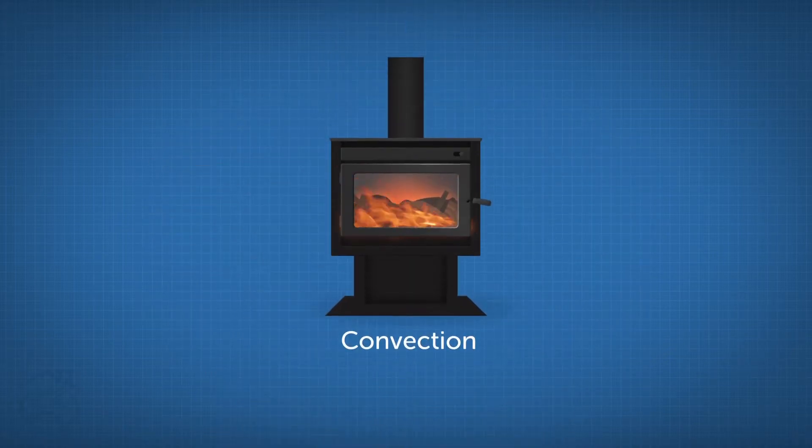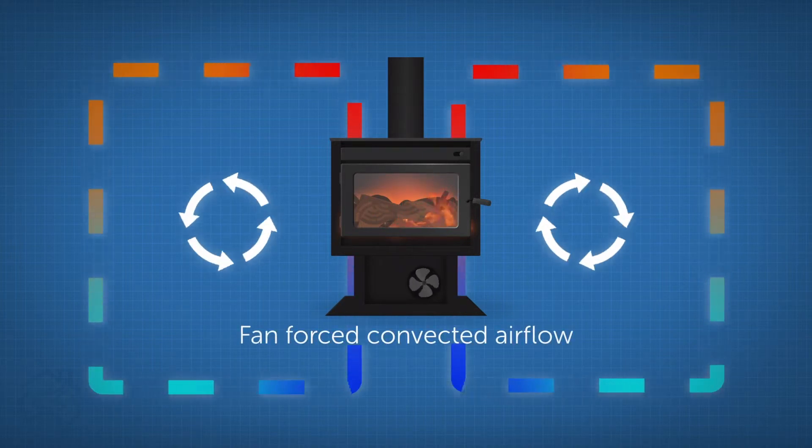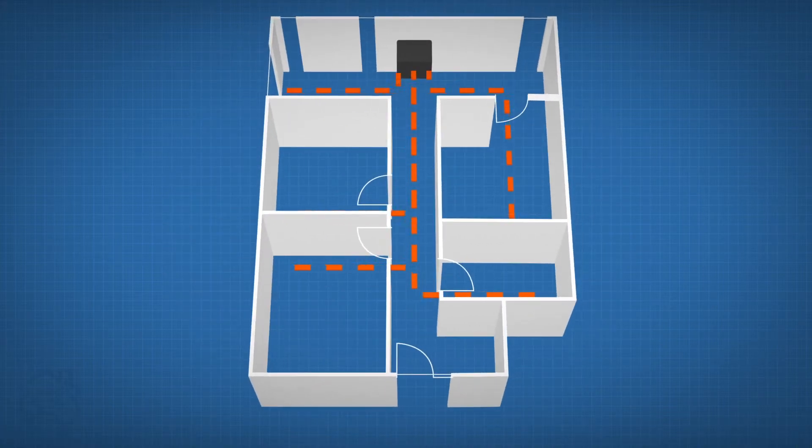A convection heater heats up the air in and around the unit and circulates it around the house by fan-forced convected airflow. Convection heaters are best for moving warm air up hallways and into other rooms.